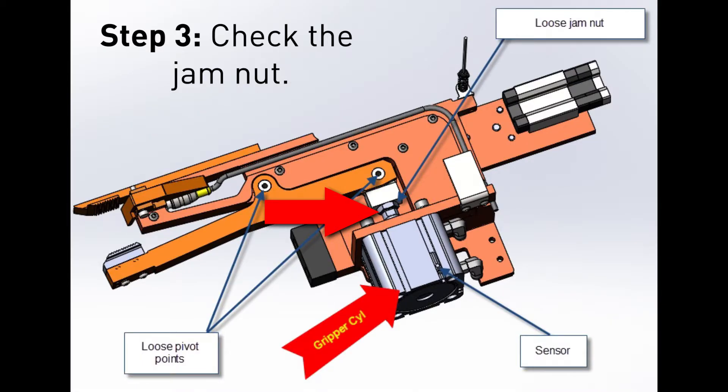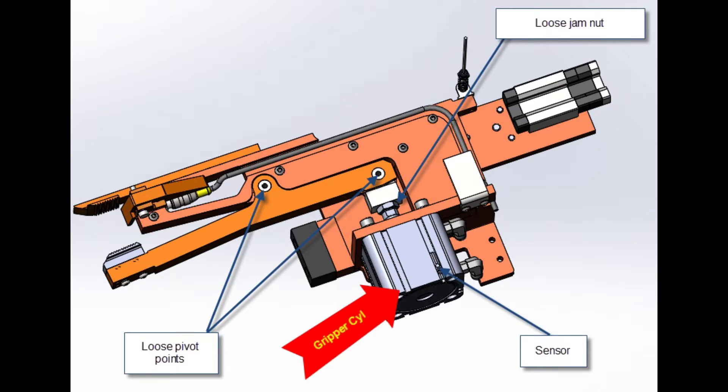Step three is to check that the jam nut on the cylinder rod is tight against the clevis and is not backed out. Also check that the pivot points are moving freely and undamaged.